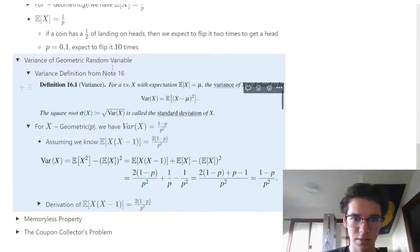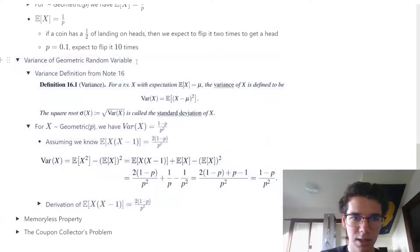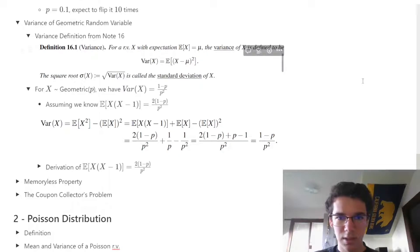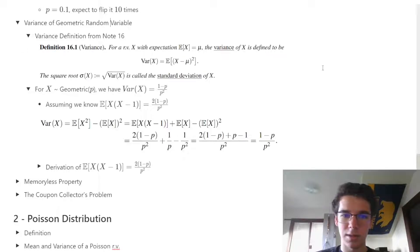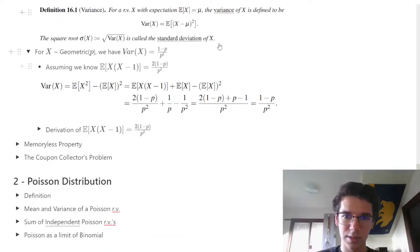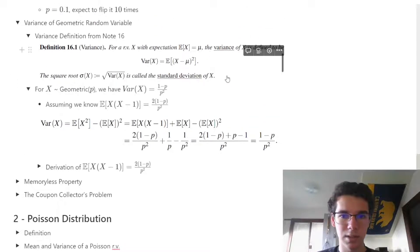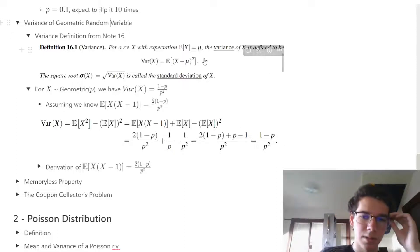Now we're going to move on to the variance of a geometric random variable. We define: for a random variable x with expectation E[X] = mu, the variance is the expectation of (x minus mu) squared.